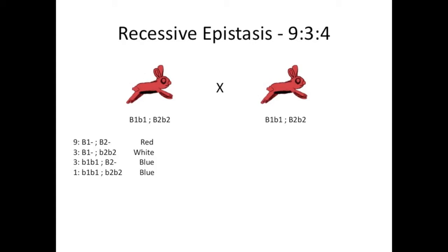Recessive epistasis is a form of gene interaction and gives a 9 to 3 to 4 ratio when dihybrids are crossed. One of the 3s is combined with the 1, and we now have 3 coat colors — I'll add a blue bunny, as it was recently the 4th of July. They're patriotic bunnies. Pause the video here if you'd like to figure out this pathway on your own before I give you the answer.